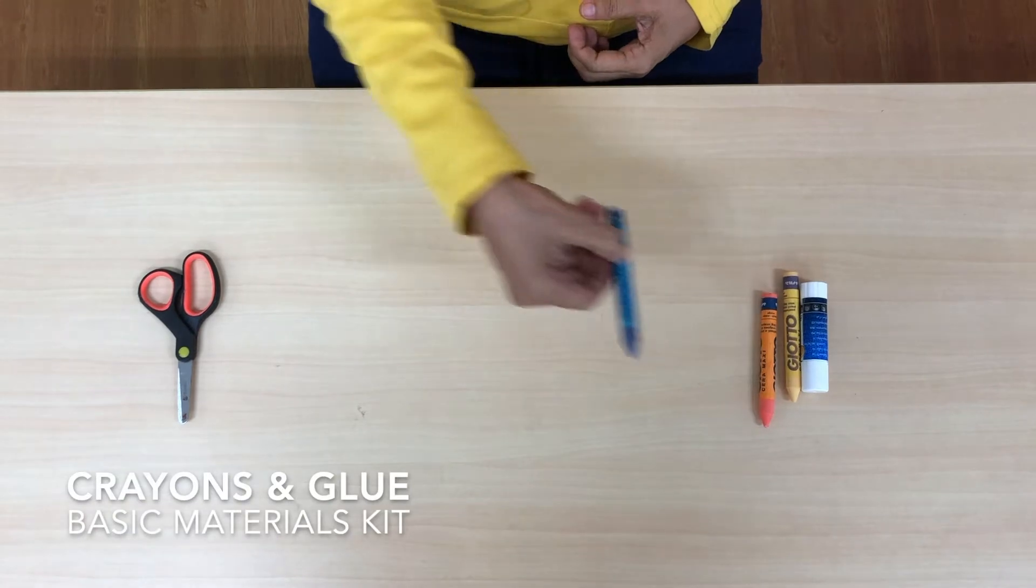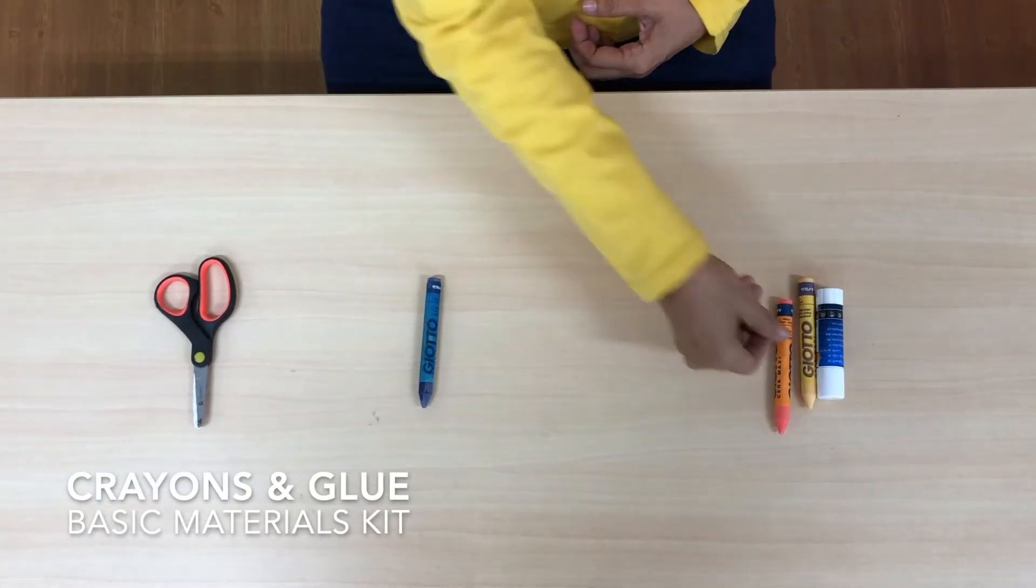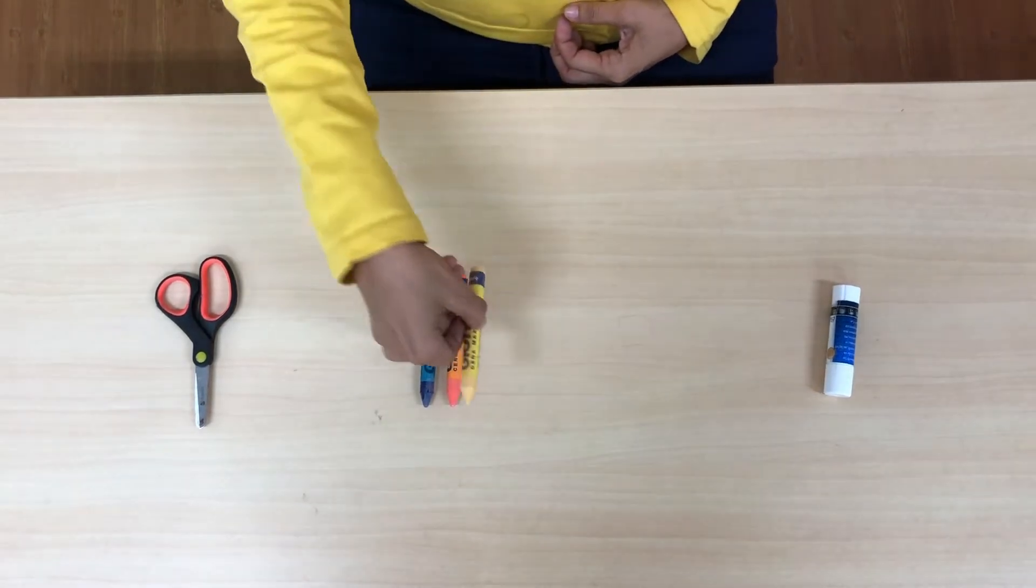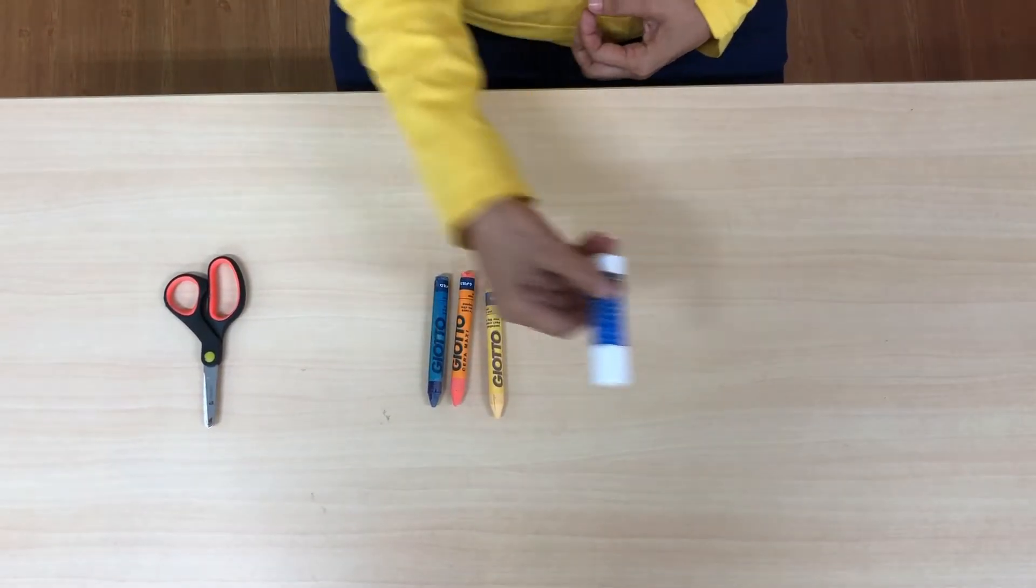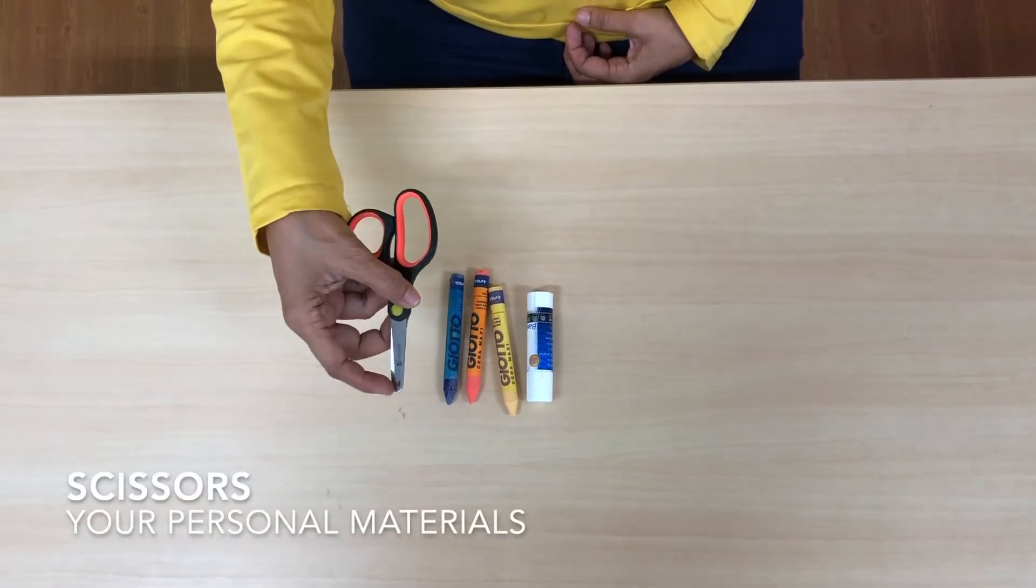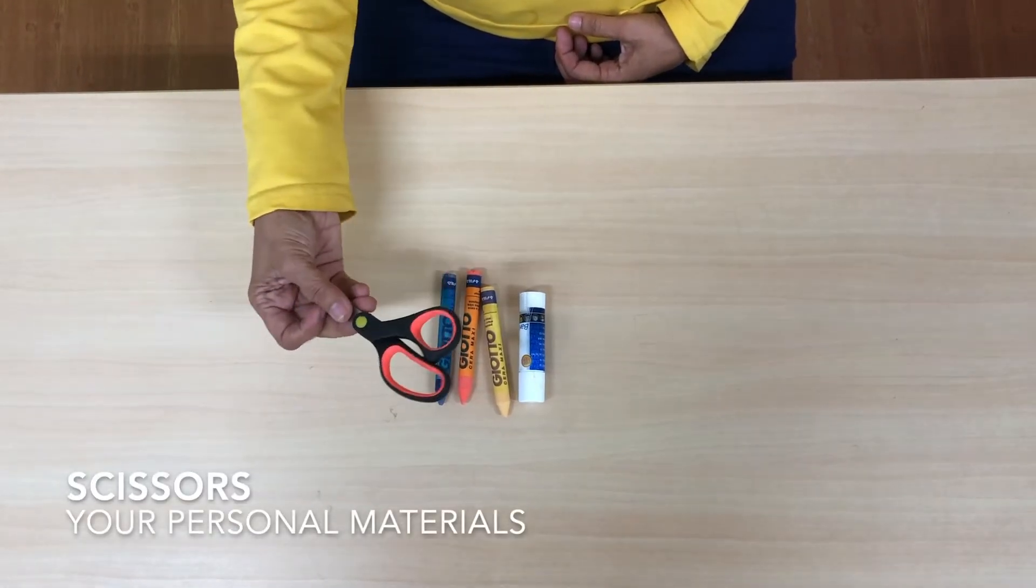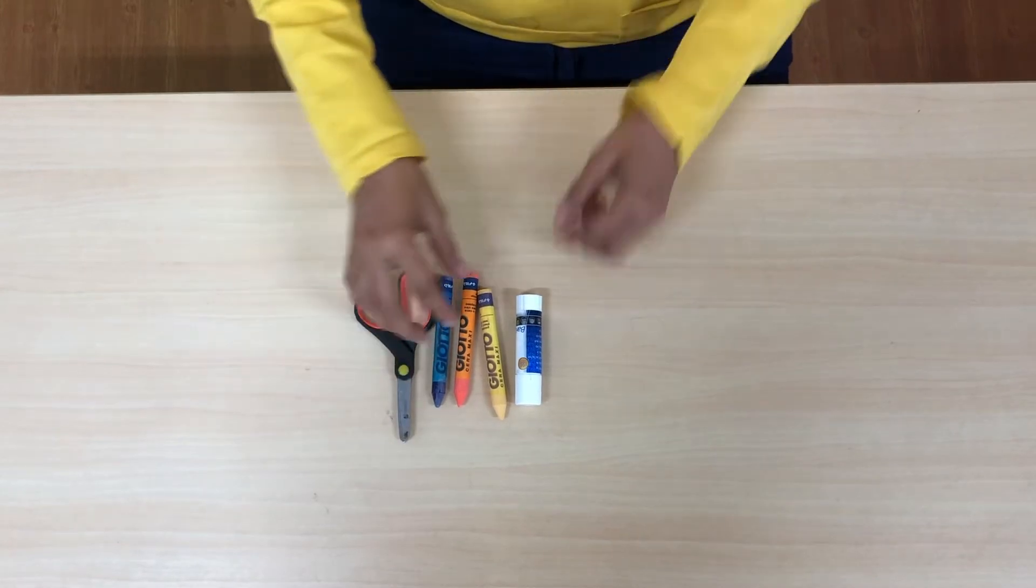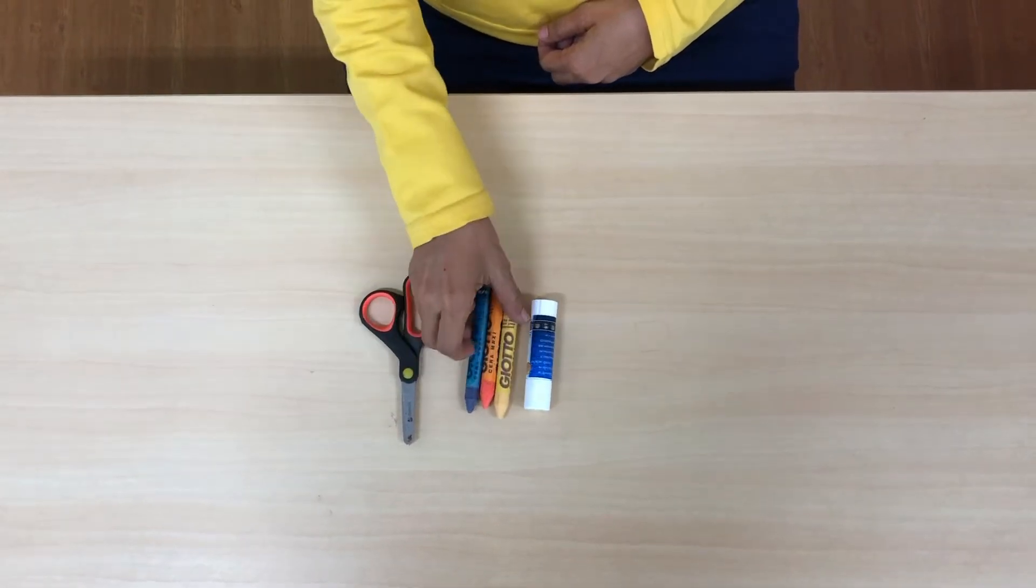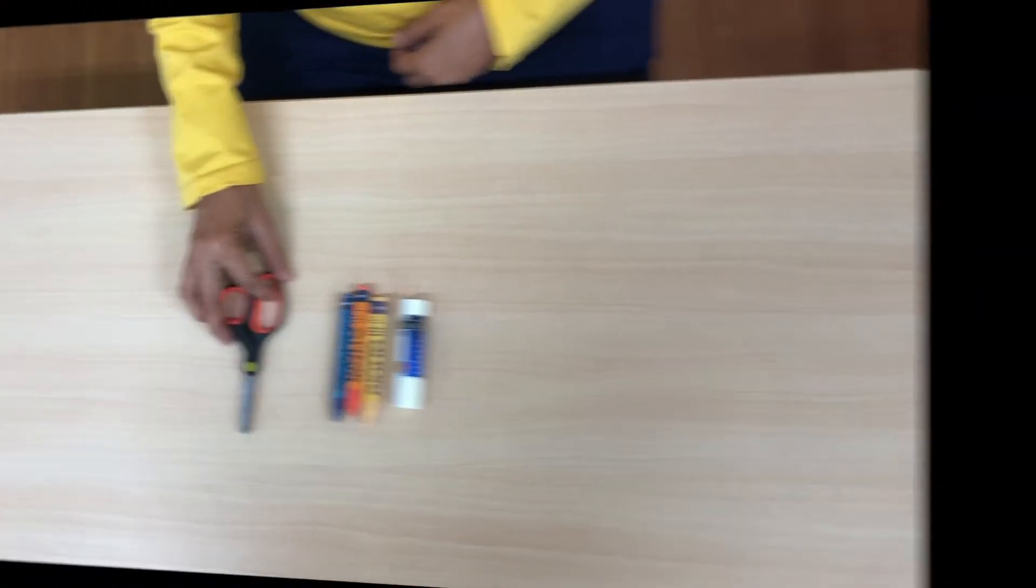This is blue crayon, orange crayon, yellow crayon, glue. Then next is scissor, but you should prepare your own scissor. This is glue, crayon, scissor.